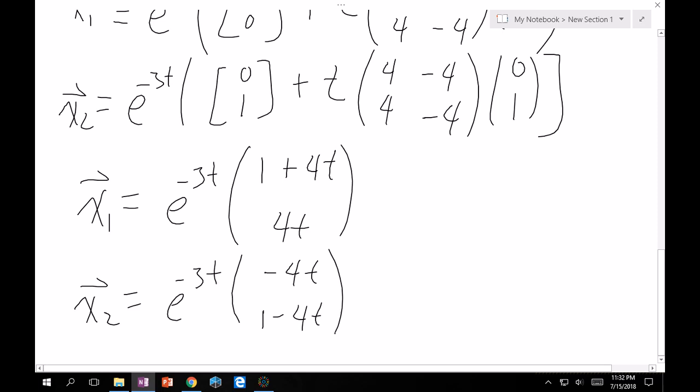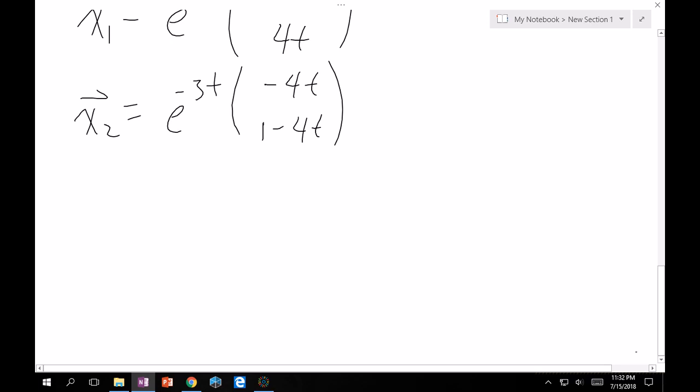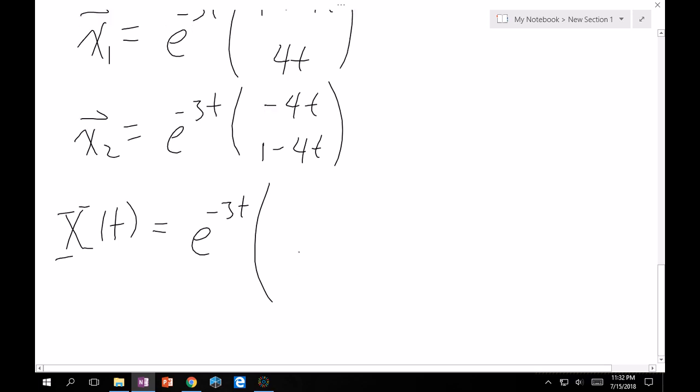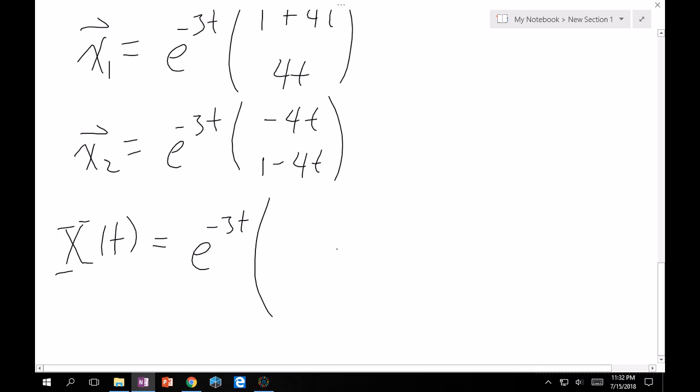Great. So from here we can now construct our fundamental matrix solution. We just put these in a column. Right. So therefore our fundamental matrix solution x of t is equal to e minus 3t because it's common to both. And so here let me scroll up a little so you can see it. So that top component is 1 plus 4t. Right. So then over here it's 1 plus 4t. Down here is 4t minus 4t. 1 minus 4t. Right. Okay.